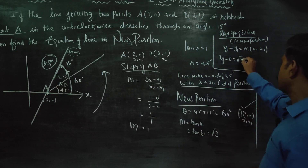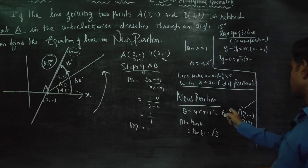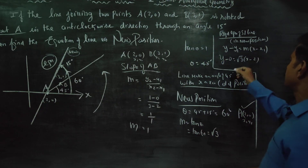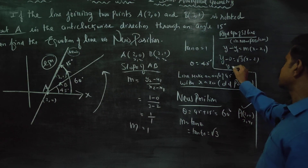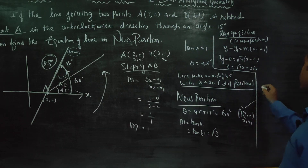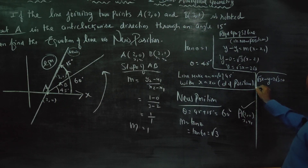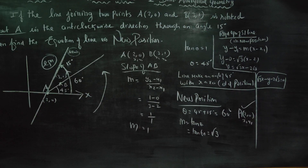Multiplying this out, y = √3·x - 2√3. Therefore, the final answer — the required equation of the line in the new position — is √3x - y - 2√3 = 0.